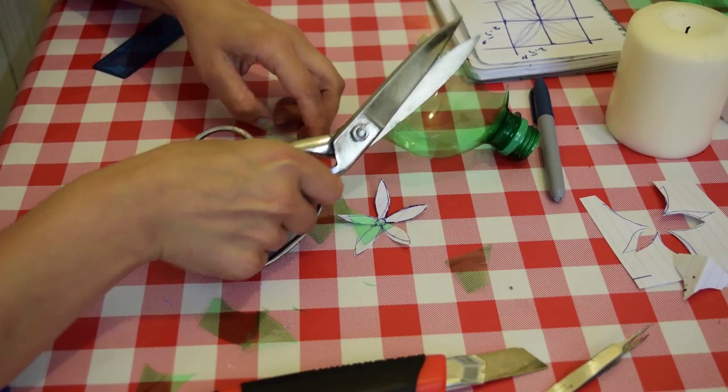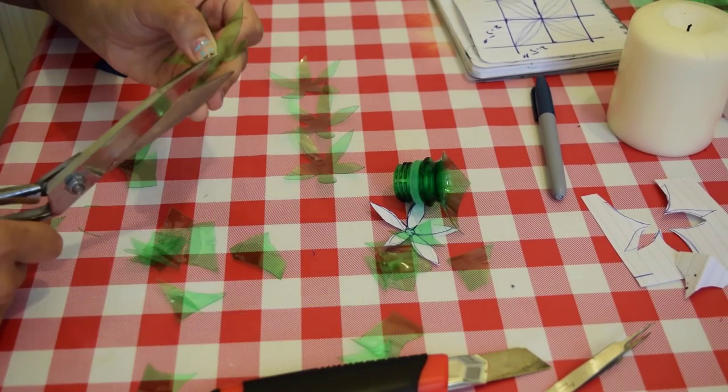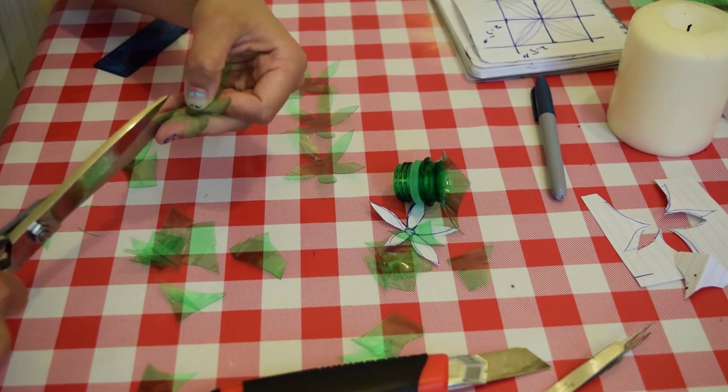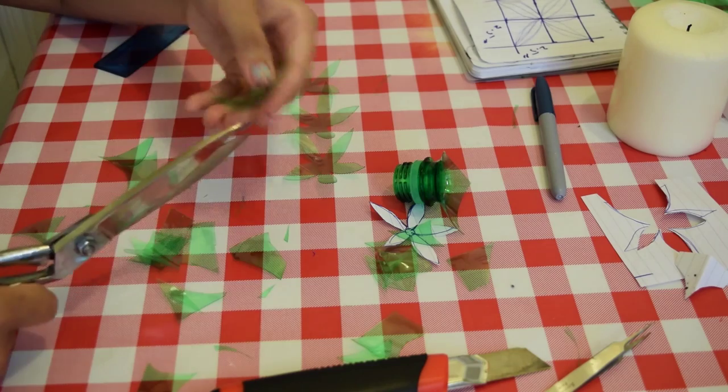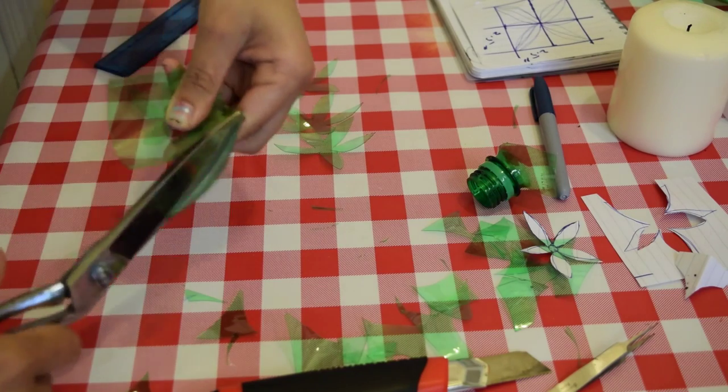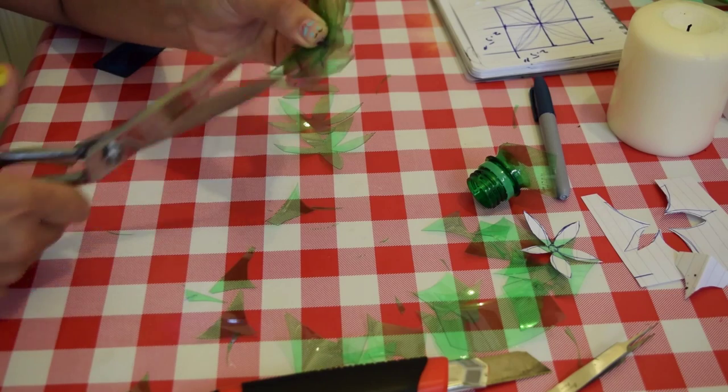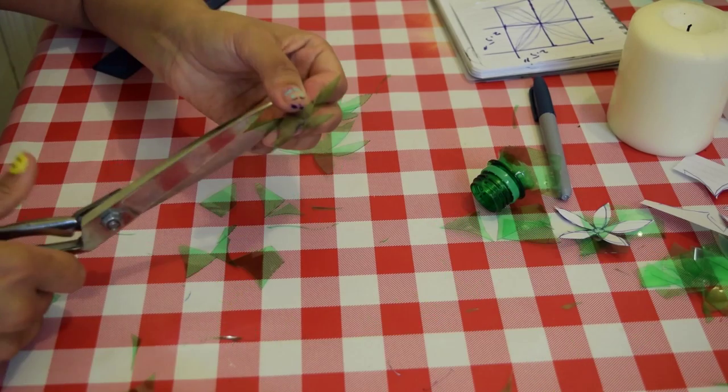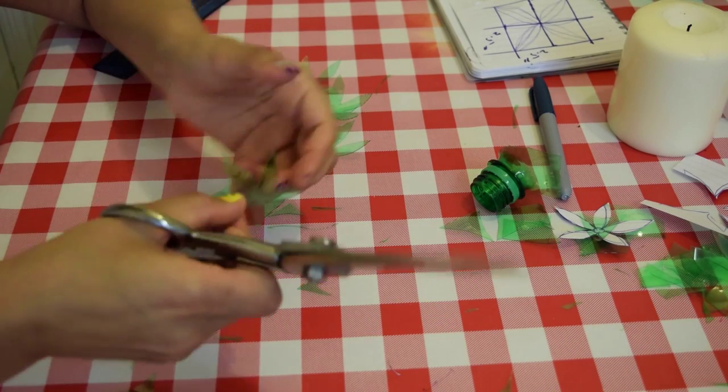As you can see, three petals are cut, but this is the fourth one, so I'm going to cut it short. I'm cutting each petal about half a centimeter short. Using this fourth petal as a template, cut the fifth and last petal. First, cut the same size as the fourth one, then cut it short. This should also be about half a centimeter short.